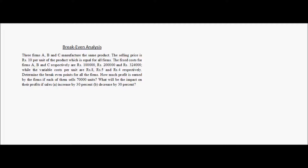Let us look at another example of break-even analysis. Three firms A, B and C manufacture the same product. The selling price is Rs. 10 per unit, which is equal for all the firms. The fixed costs for firms A, B and C respectively are Rs. 100,000, Rs. 200,000 and Rs. 324,000, while the variable costs per unit are Rs. 8, Rs. 5 and Rs. 4 respectively. Determine the break-even points for all the firms. How much profit is earned by the firms if each of them sells 70,000 units? What will be the impact on their profits if sales increase by 30% and decrease by 30%?